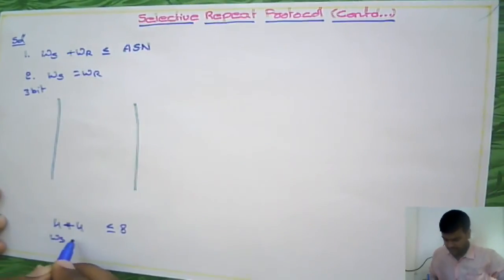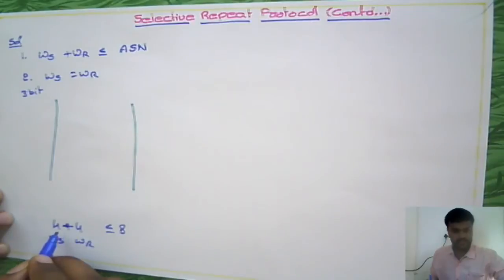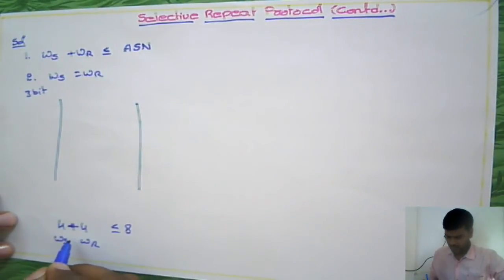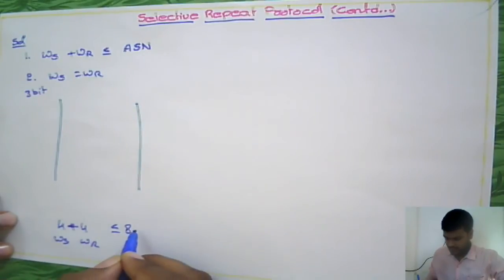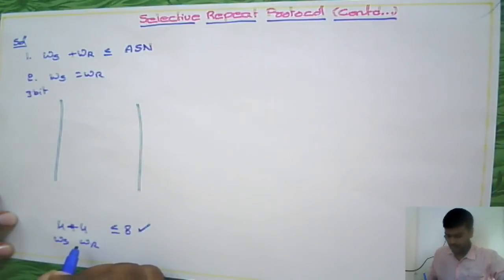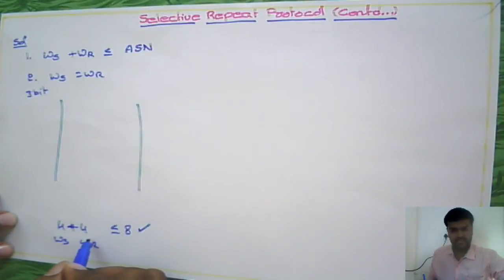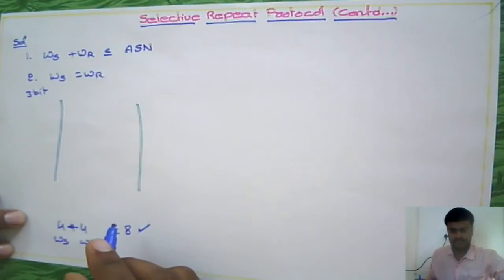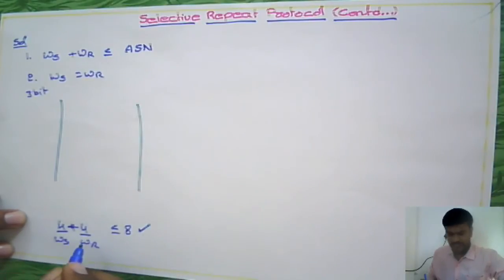So we can take window sizes of 4+4, 3+3, or 2+2 for sender and receiver. We should not take 1+1 because that would be equivalent to stop-and-wait protocol. By default, we take exactly half of the available sequence numbers — 4+4 in this case — just as in Go-Back-N where sender window size defaults to n minus 1 of total available sequence numbers.